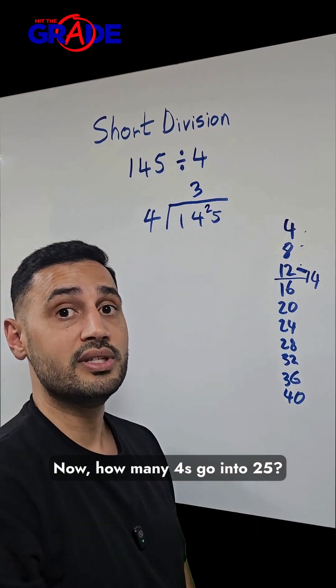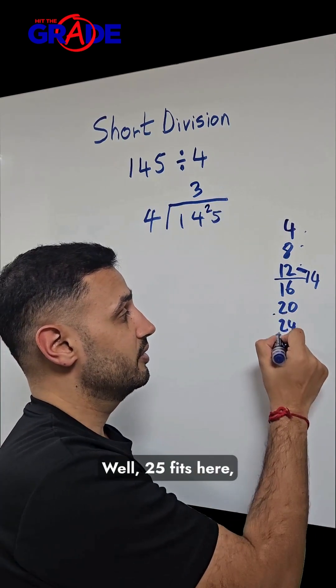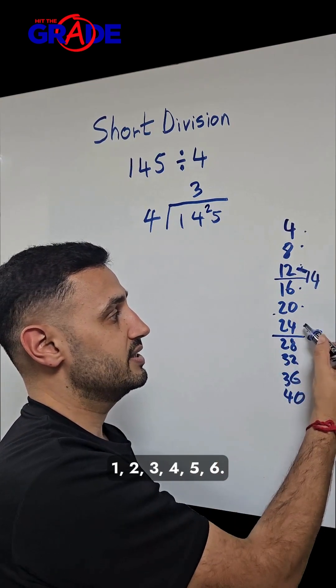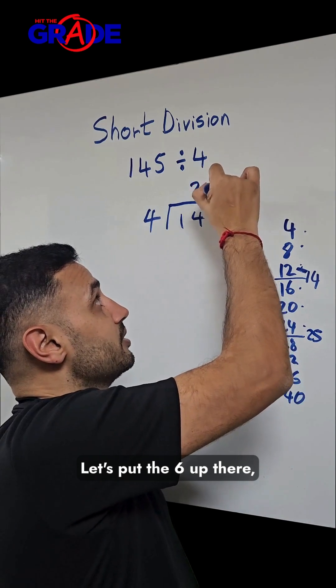Now, how many 4s go into 25? Well, 25 fits here. So let's count. 1, 2, 3, 4, 5, 6. Let's carry it, put the 6 up there.